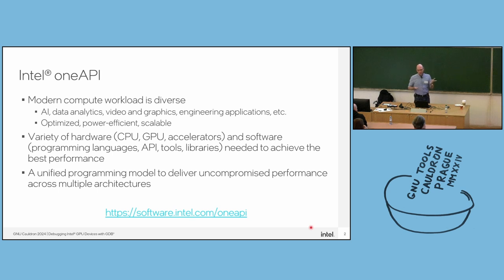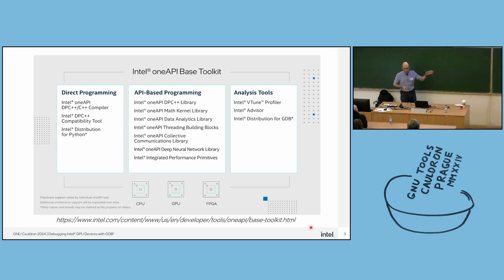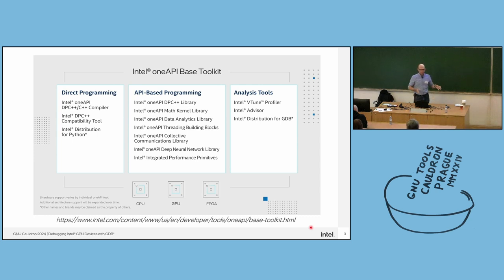Intel OneAPI is an initiative that aims to provide programmers with a unified model to get towards this goal. There are various toolkits in OneAPI releases. This is a big picture of the base toolkit. It contains compilers, some tools for API-based programming, and also analyzers. With these, programmers can write applications that target CPUs, GPUs, or FPGAs.